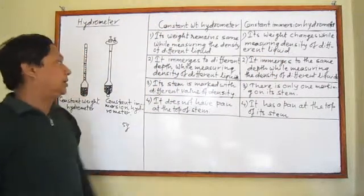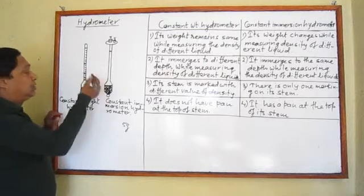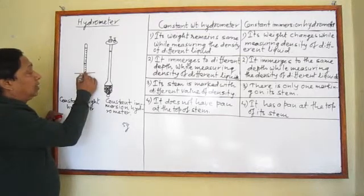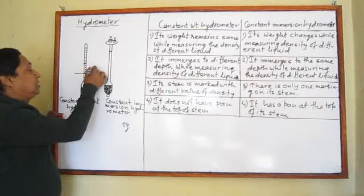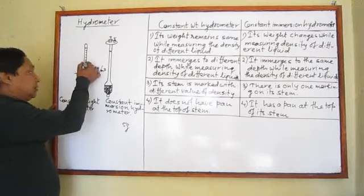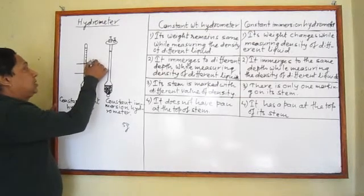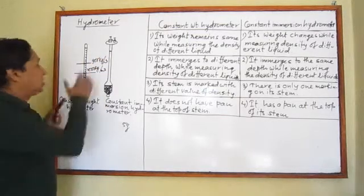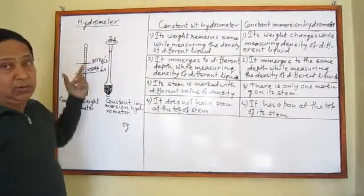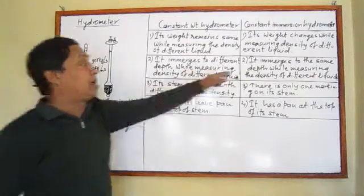Second difference: the constant weight hydrometer immerses to different depths while measuring the density of different liquids. For example, in water it may immerse to a level reading 1000 kg/m³, and in another liquid to a level reading 900 kg/m³ — you directly read the density. But in the constant immersion hydrometer, whether measuring oil, water, or salt solution, the hydrometer is always immersed to the same marking, so it always reaches the same depth.